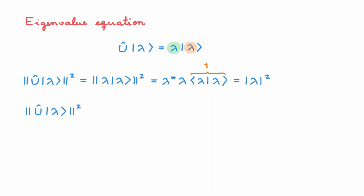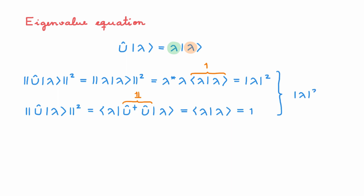Let's now write the norm squared again. We now first expand in terms of the bra and the ket. As U is unitary, we end up with ⟨λ|λ⟩, which equals 1. Putting these results together we get that the absolute value squared of λ is equal to 1. This means that the eigenvalues of a unitary operator are numbers of magnitude 1. We can write any number of magnitude 1 as e^(iφ_λ), where φ_λ is a real number. So the eigenvalues of unitary operators are in general complex numbers, but their magnitude must be equal to 1. This is quite different to what we know about the eigenvalues of Hermitian operators, which can take any value but they must be real numbers.